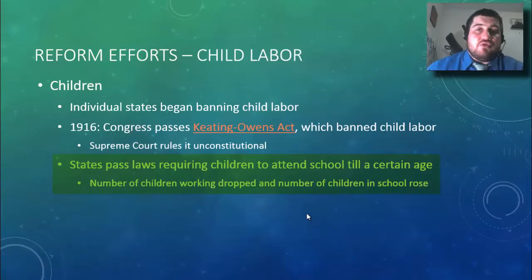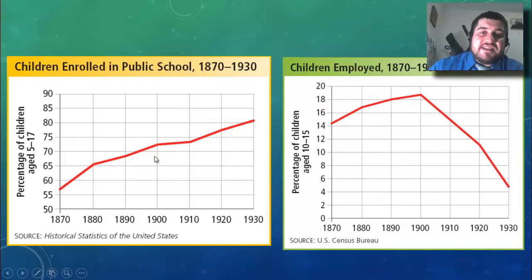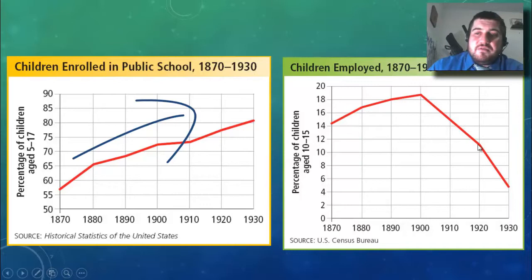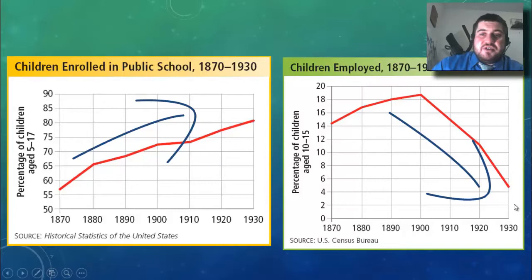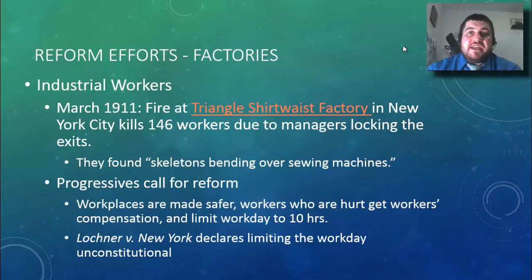As evidenced by these graphs, children enrolled in public school rose a lot during this time. Right around the turn of the century in 1900, child labor fell off, and by 1930 it was at only five percent for children aged 10 to 15. What effectively ended child labor was this backdoor route of requiring kids to be in school until a certain age.